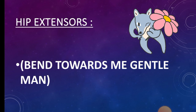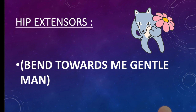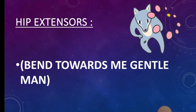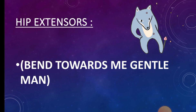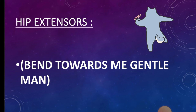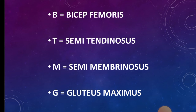Moving towards hip extensors. The mnemonic for hip extensors is 'pen towards me, gentlemen.' B for biceps femoris, T for semitendinosus, M for semimembranosus, G for gluteus maximus.